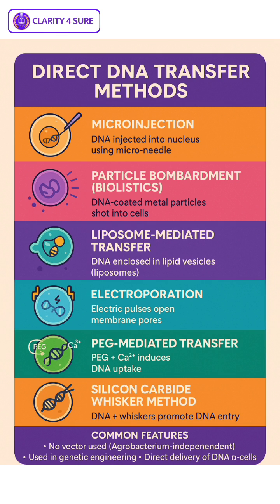Otherwise we could have used the vector Agrobacterium for them. Number one is microinjection. Here DNA is directly injected into the nucleus or cytoplasm using a fine glass micropipette. Though precise, it's labor-intensive and suited mainly for protoplasts or large cells.